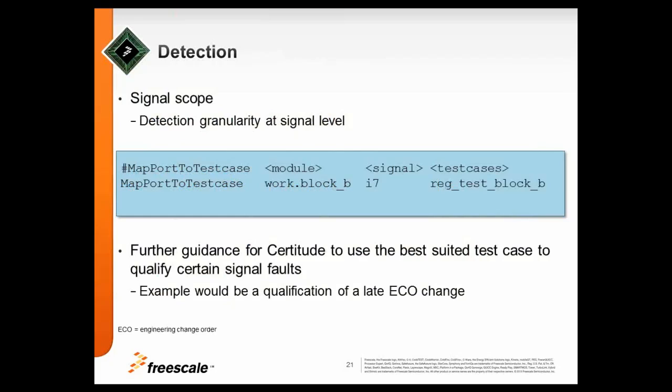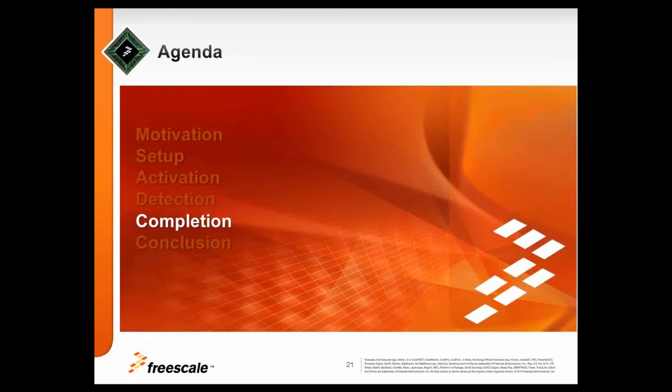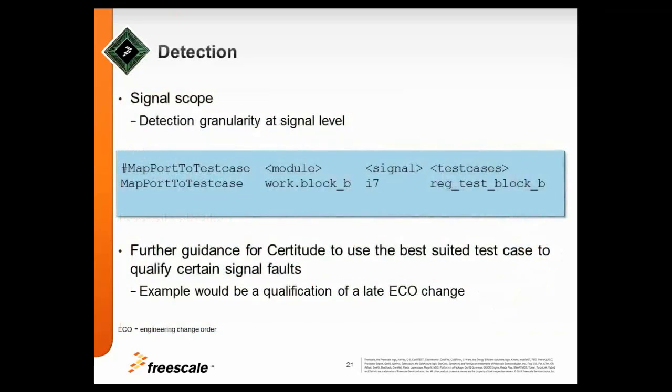And the other thing that we looked at is going down one level further. So, from the instance to a signal, instance to a signal. This is how we specify it. You have this command for that. But we don't use this so much. It would be of use if you go down kind of an ECO flow where you want to see, OK, we changed in this area things. Are we still OK? Then you could use this. We use, in essence, main stream the second method in the instance phase.